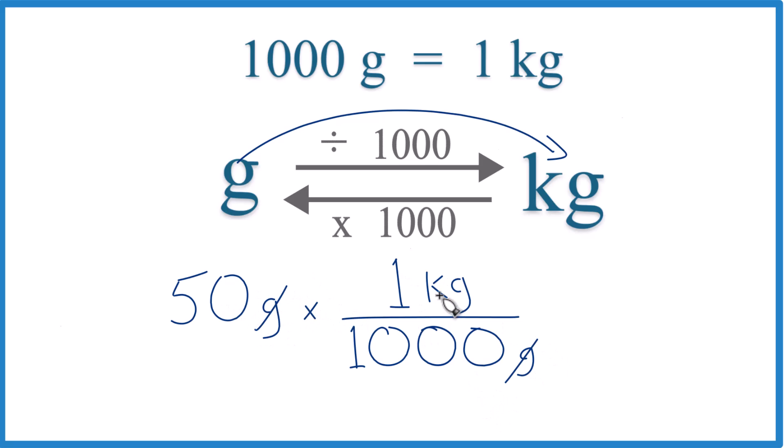50 times one kilogram, 50 kilograms divided by a thousand gives us the same answer as before, 0.05 kilograms. It's Dr. B converting 50 grams to kilograms. Thanks for watching.